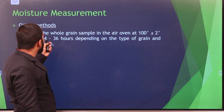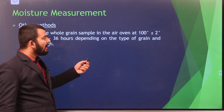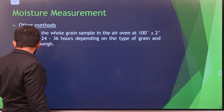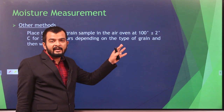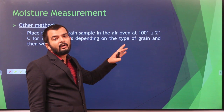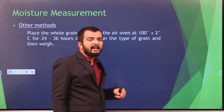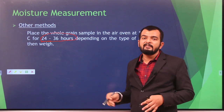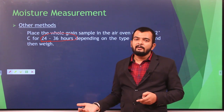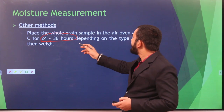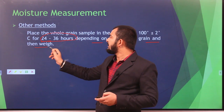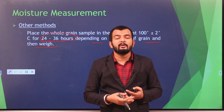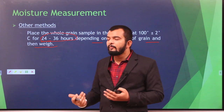Another direct method places whole grain sample in an air oven at 100 degrees Celsius for 24 to 36 hours. Since the temperature is lower, the drying duration must be longer to get a consistent value. The duration also depends on the type of grain and weight of the sample being dried.